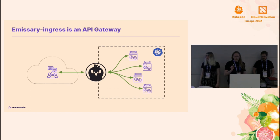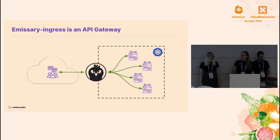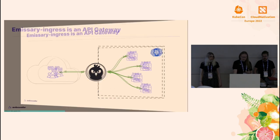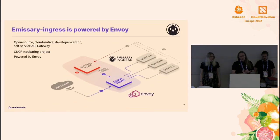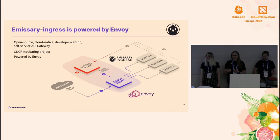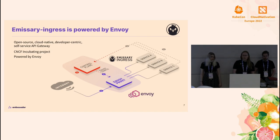This is colloquially the Ingress problem. Emissary focuses on the Ingress problem because it's always the first one that cloud-native developers have to wrestle with. In a lot of smaller organizations and less complex situations, it can be the only problem a developer needs to deal with. Emissary is an open source, cloud-native, developer-centric, self-service API gateway powered by Envoy.